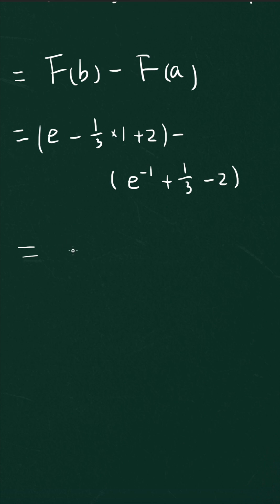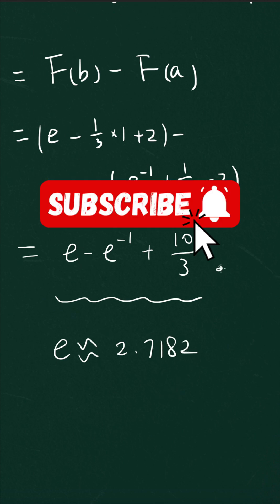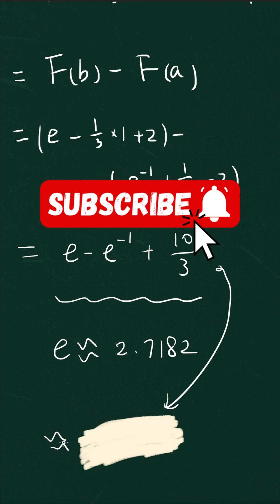The final result is e - e^(-1) + 10/3. But if you want an approximation, remember e ≈ 2.7182. When you plug it in, this value is approximately... Let's do a little calculation.